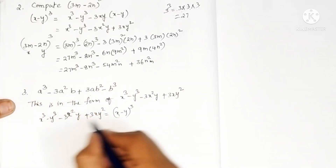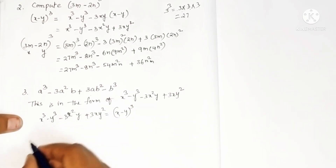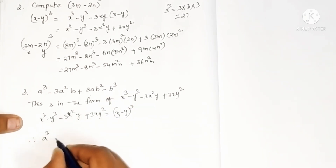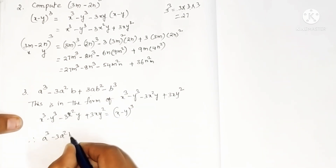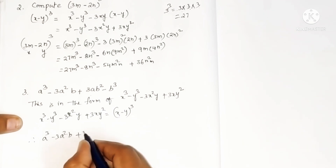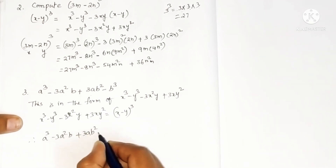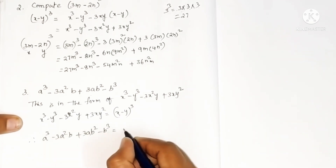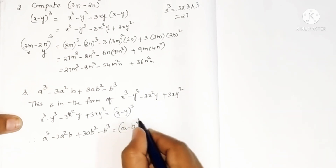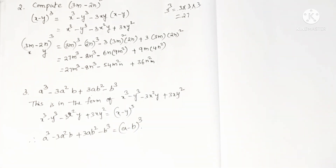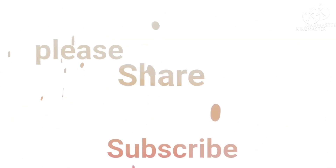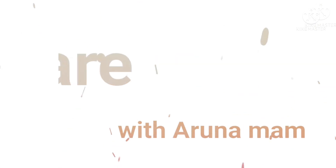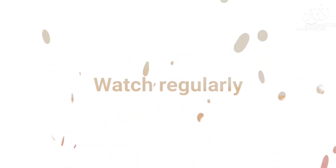Here, in the place of x we have a, and in the place of y we have b. Therefore, a cube minus 3 a squared b plus 3 a b squared minus b cube is simply equal to a minus b whole cube. That's it.